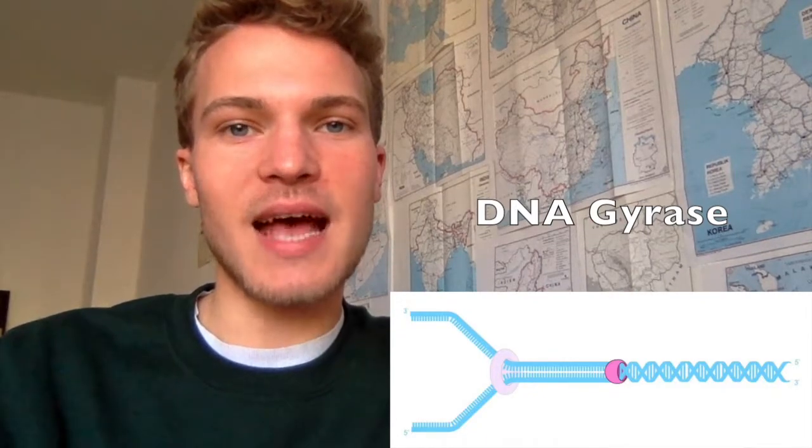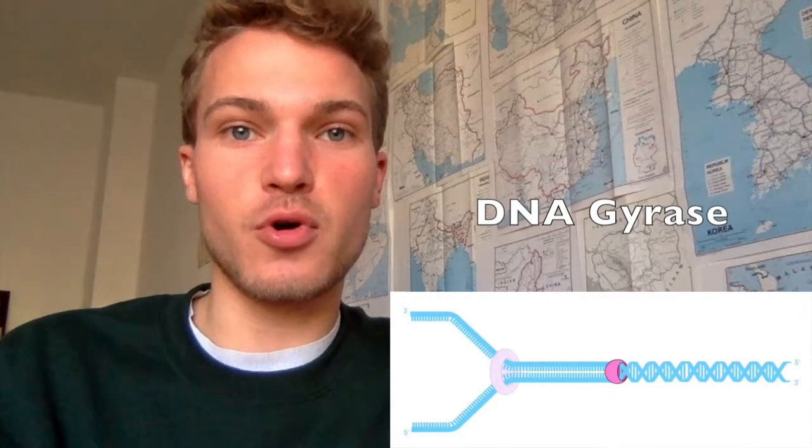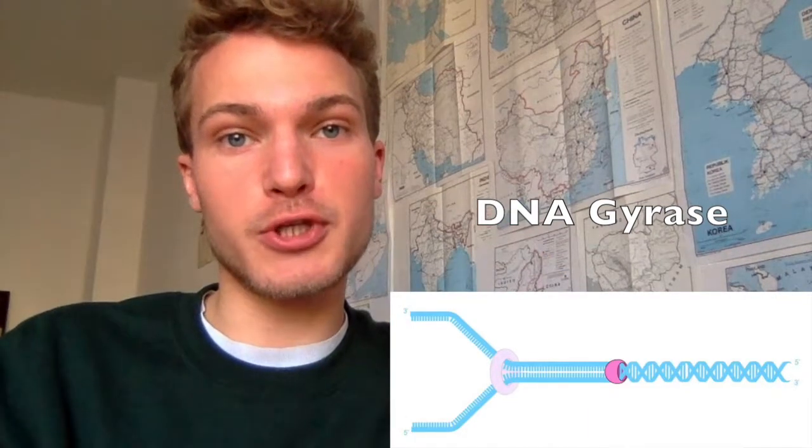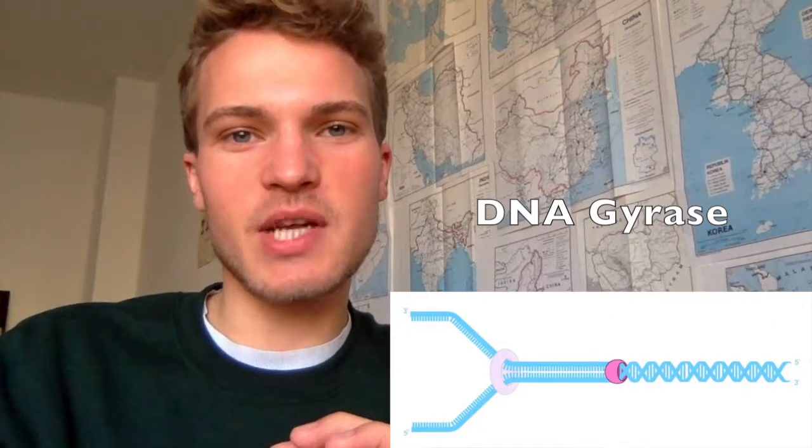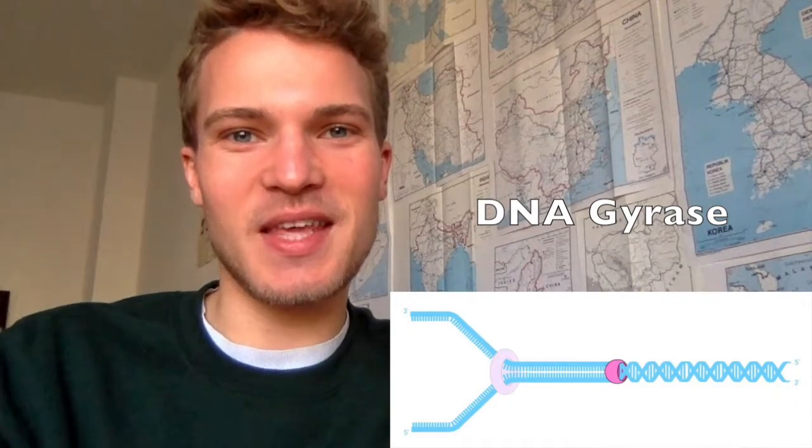A new enzyme called DNA gyrase acts as an important helper. As DNA helicase unwinds the DNA and breaks the hydrogen bonds, there is a lot of stress on the DNA molecule. DNA gyrase prevents negative supercoiling. DNA is normally tightly coiled and packaged, so during replication we must carefully unwind it while also preventing it from recoiling before the entire process is complete.